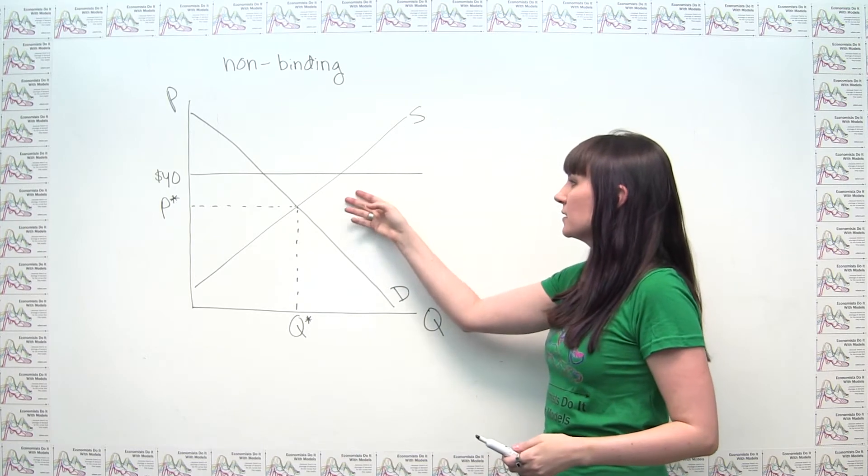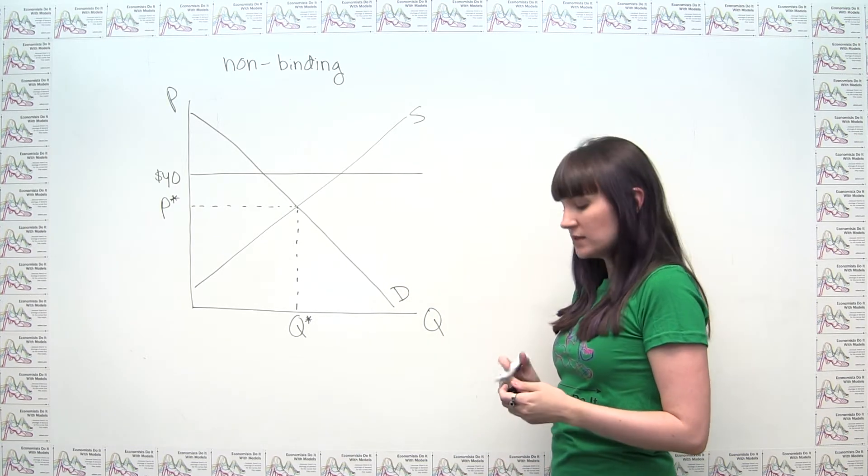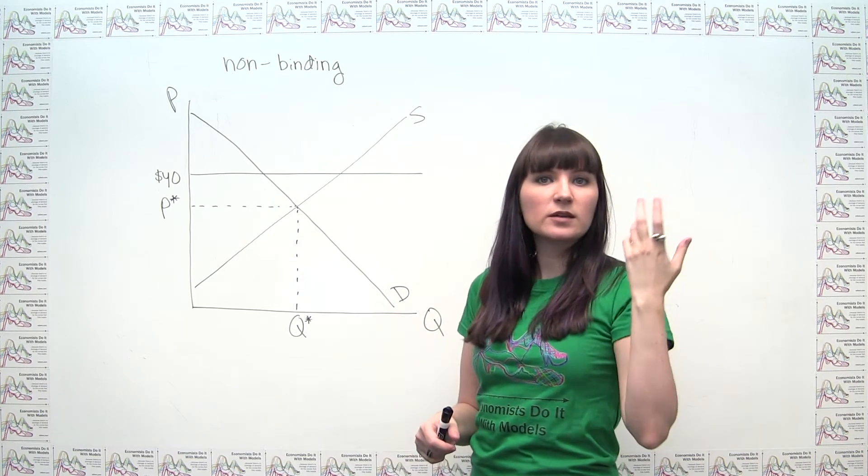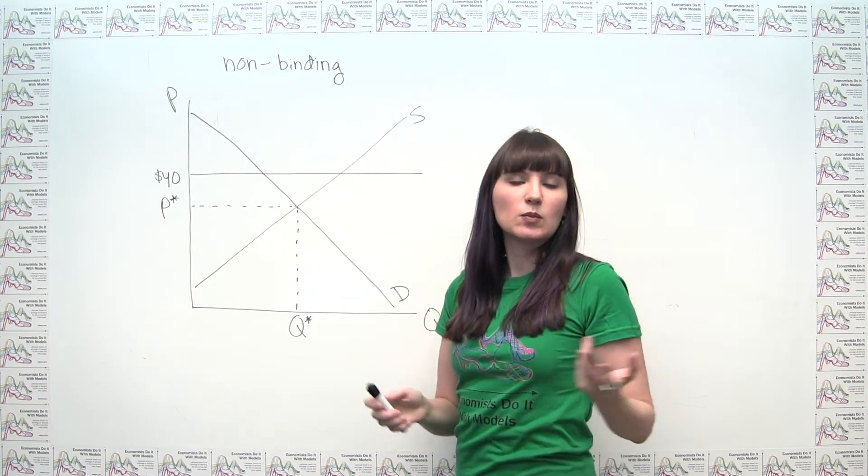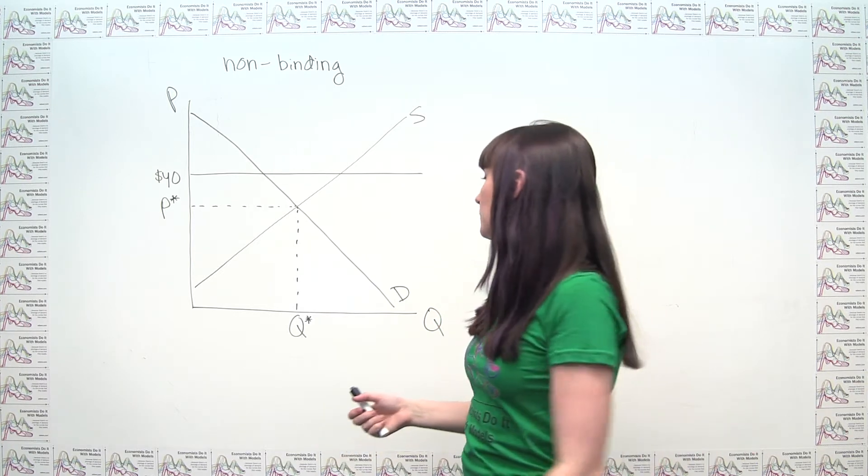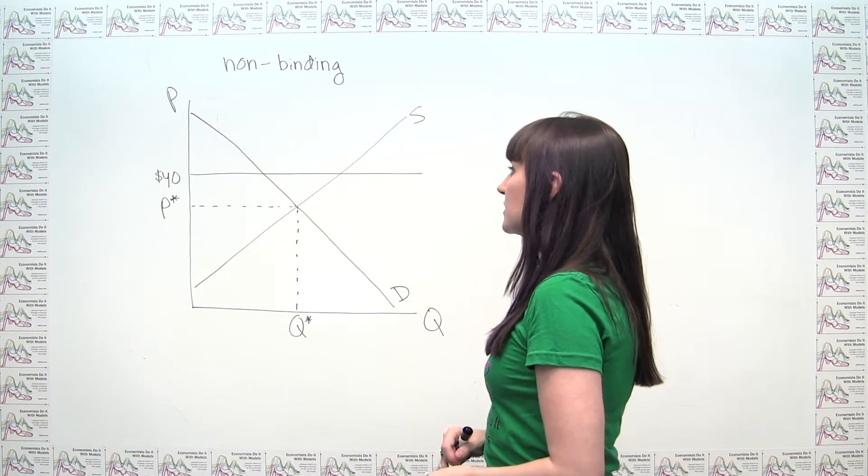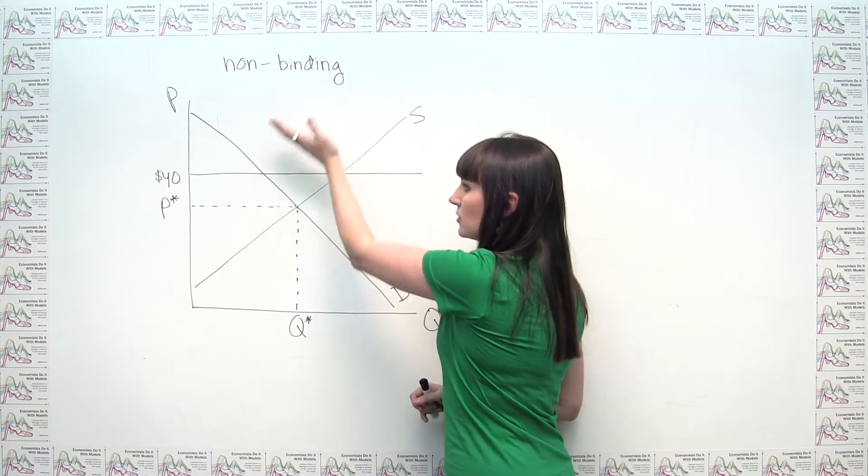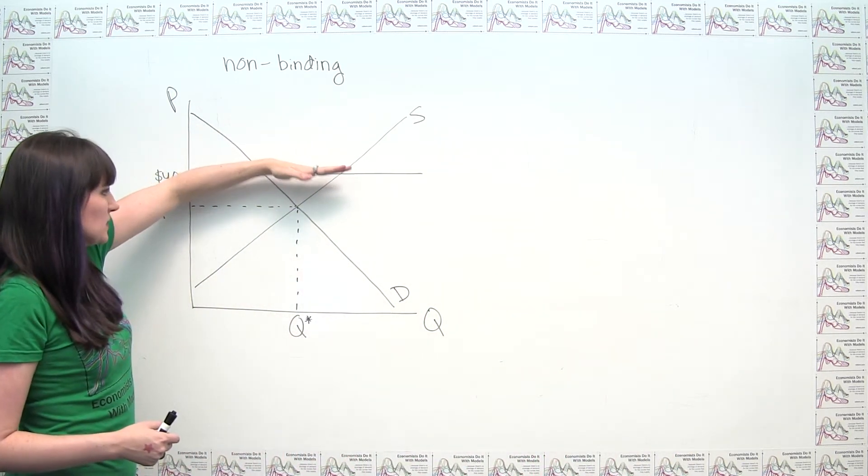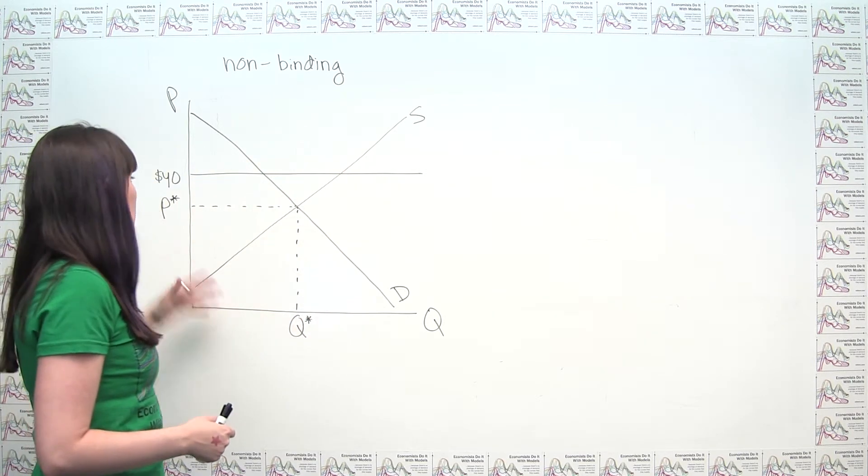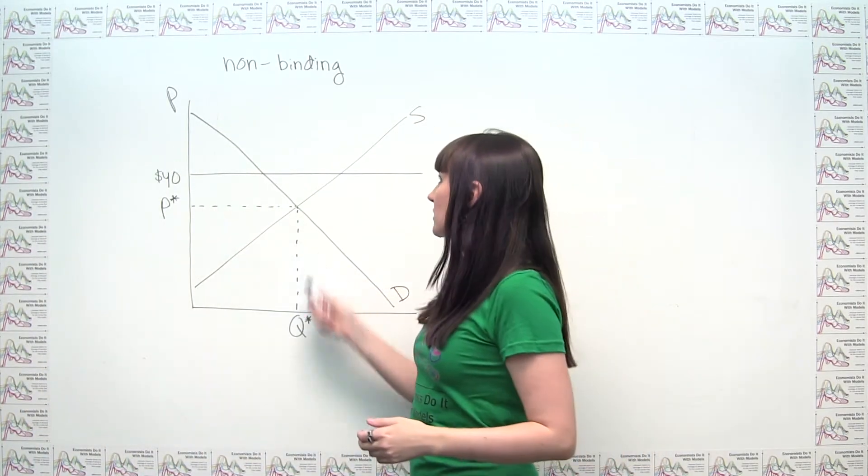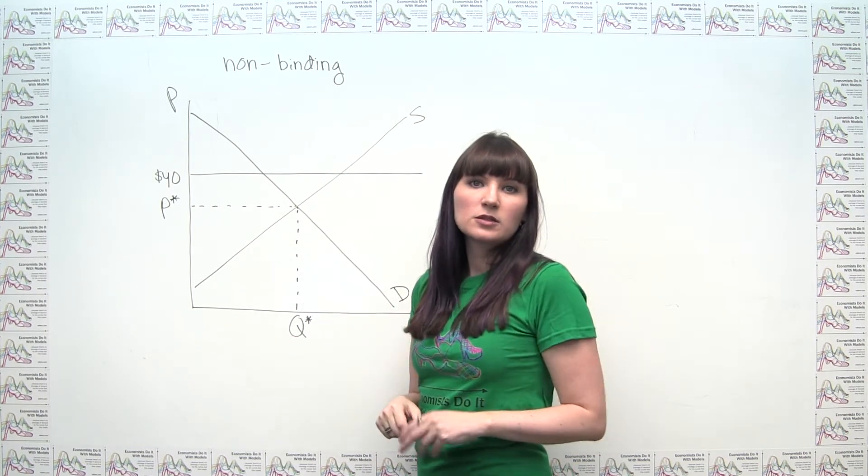And, it could make sense from a policy perspective. If you're worried about supply or demand shifting in such a way that it's going to make prices spike, you might want to put what's currently a non-binding price ceiling in place as a precautionary measure, right? So things that aren't binding now could become binding in the future, and vice versa. But nonetheless, it's not like this non-binding price ceiling is going to cause prices to increase up to $40. It just doesn't make sense. What it's doing is it's restricting the universe of possible prices to these prices here. The original market equilibrium price was within that universe, so we're still able to have the same market outcome in terms of price and quantity. So if this $40 is non-binding, no effect.